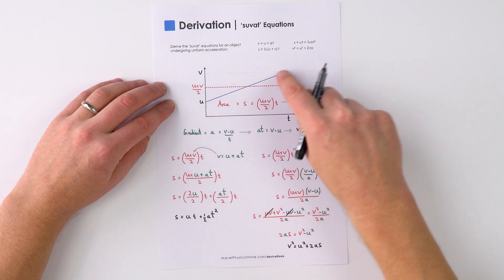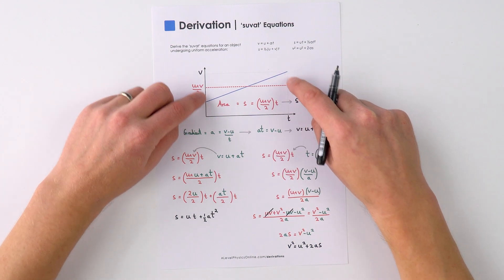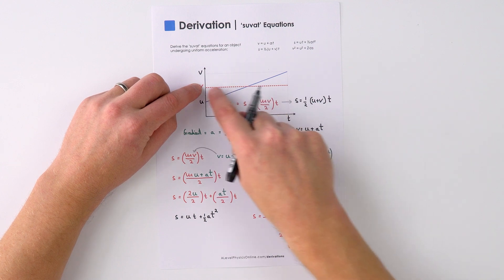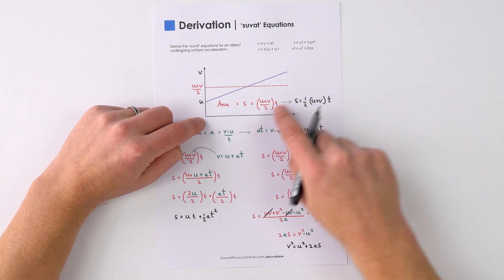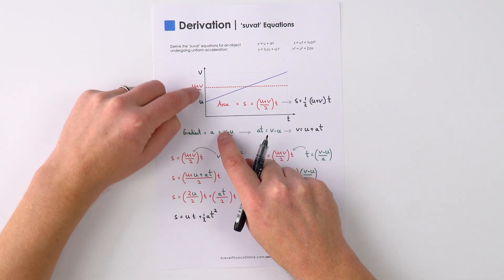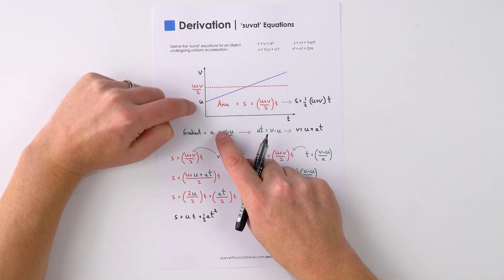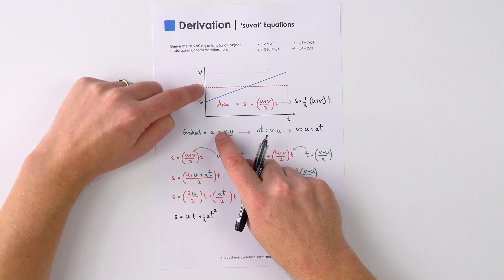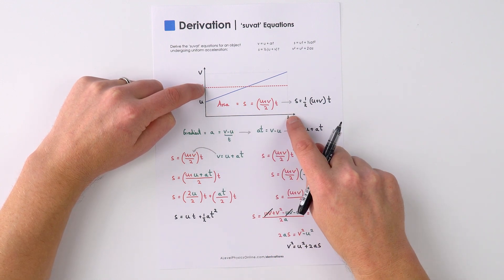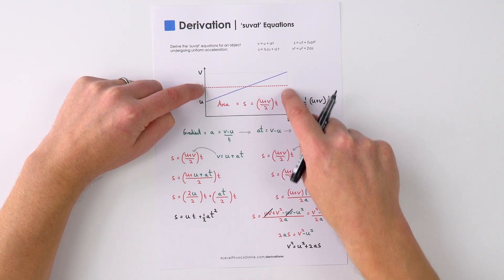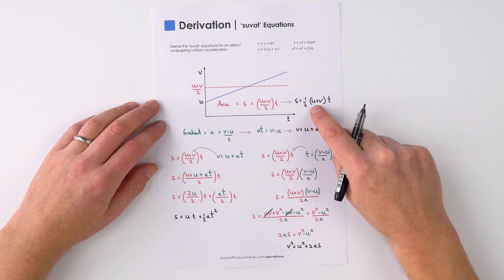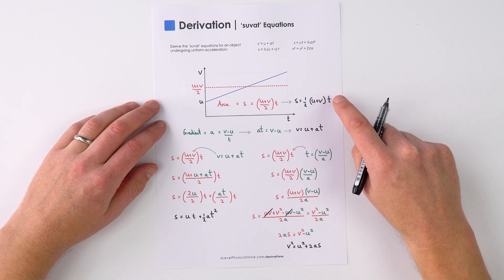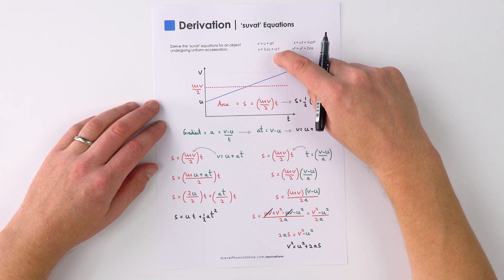Now the area underneath this blue line here is the same as the area underneath this red dotted line and that's going to be equal to the height here, which is the average of u and v, so that's u plus v over two, and that's going to be multiplied by the time because it's the area of this rectangle that we're looking at. Therefore s is equal to a half u plus v times t. So that's the first of the Suvatt equations up here.